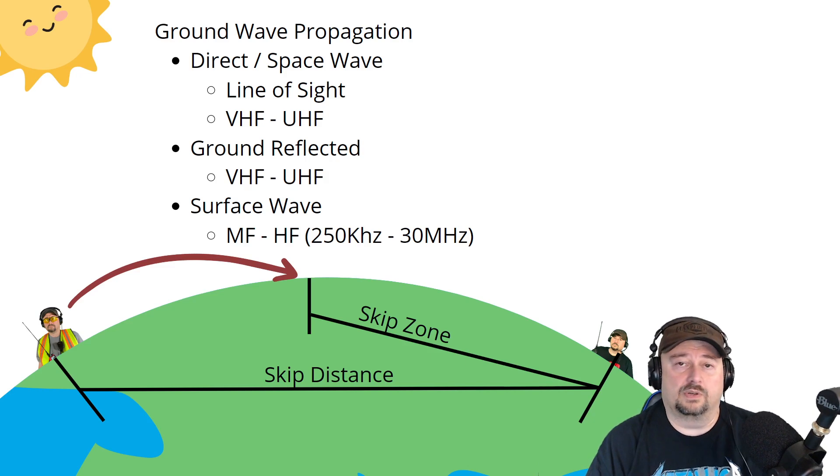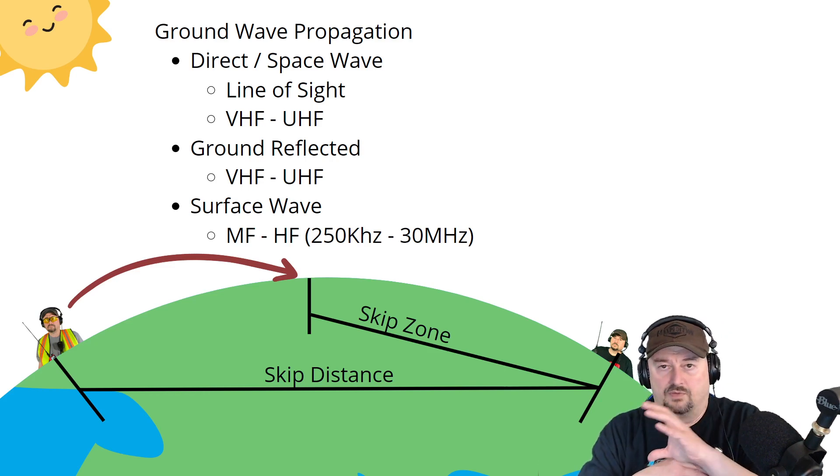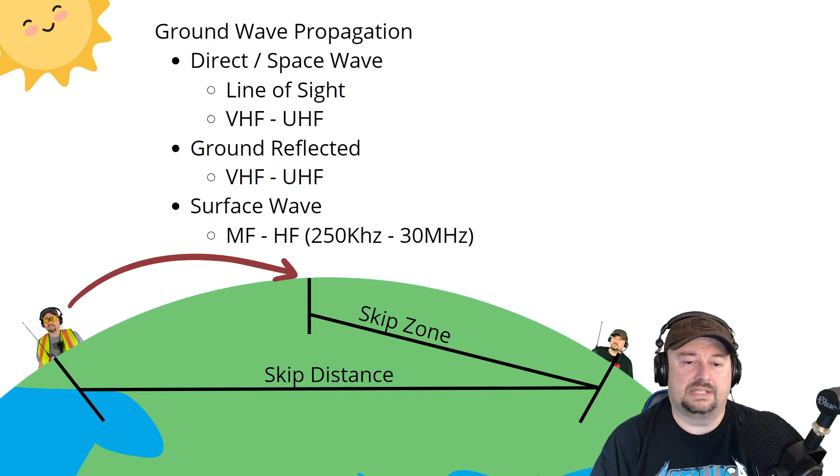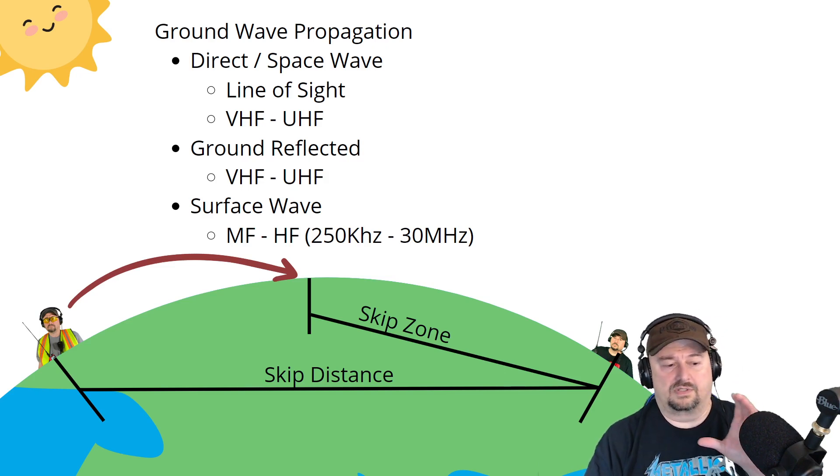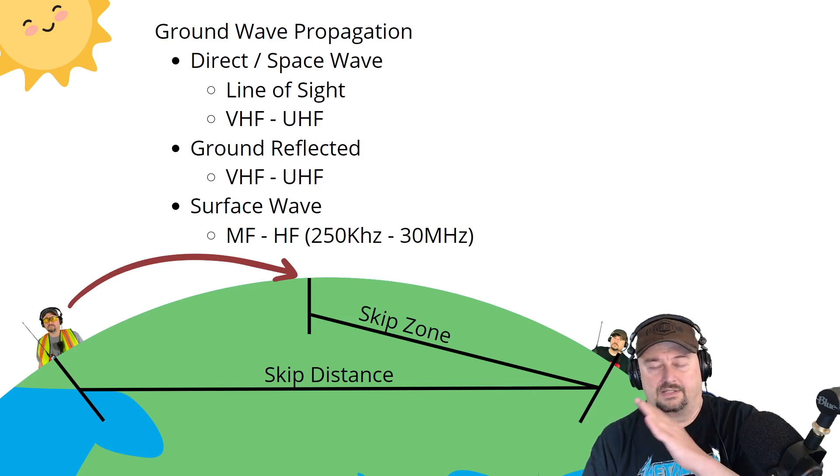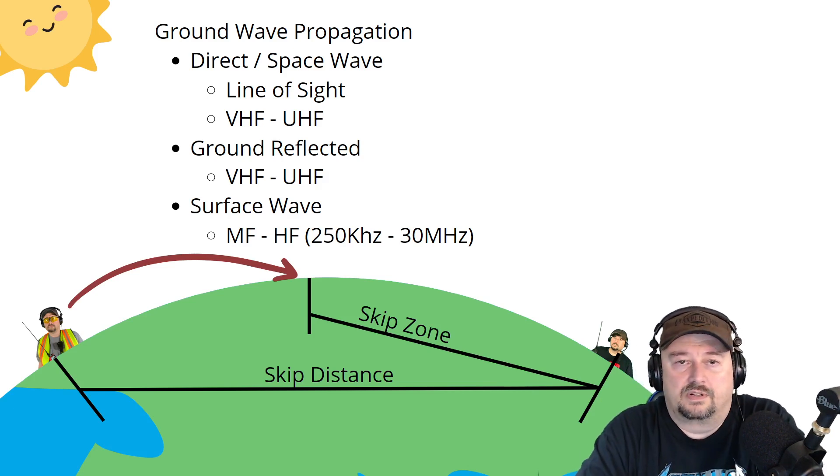And then the other thing we're going to talk about real quick is the surface wave. And this is more prominent in lower frequencies, but can go all the way up to 30 megahertz or the 10 meter band. And this is when a frequency leaves an antenna and kind of hugs the ground and moves along. And what happens is that part of that signal gets slowed down or drug across the ground, so it kind of falls forward, kind of leans forward. And that's what holds it to the surface of the Earth.